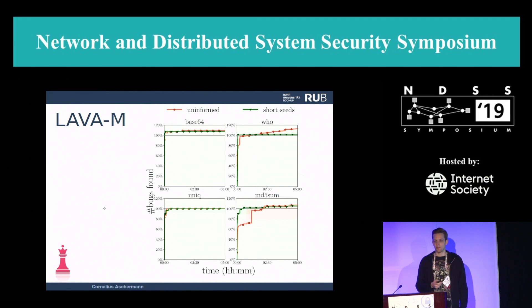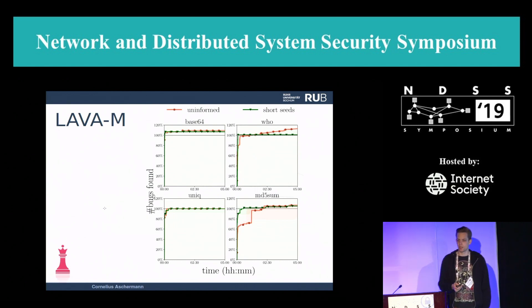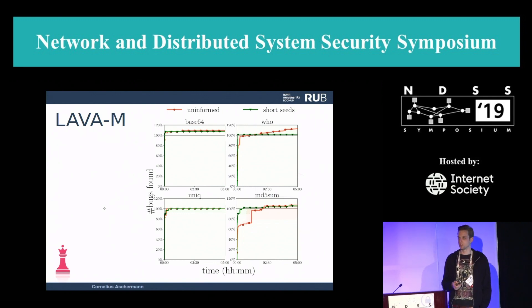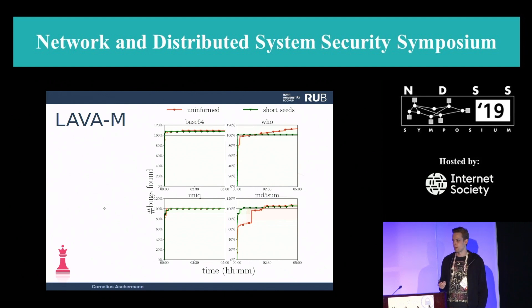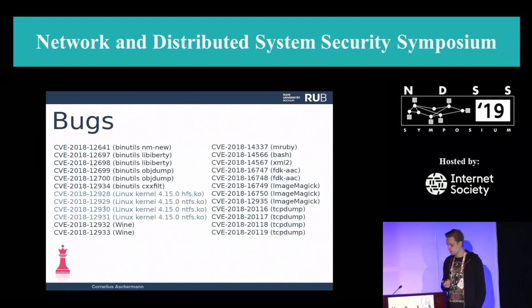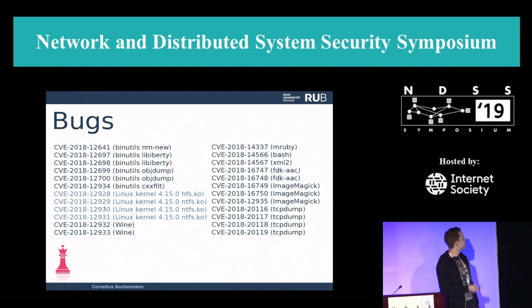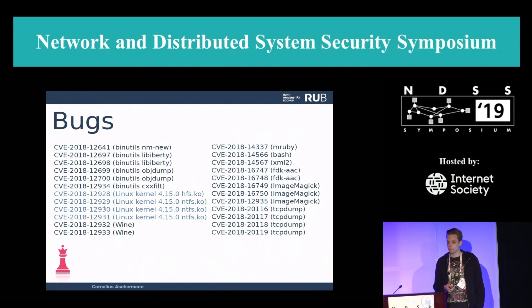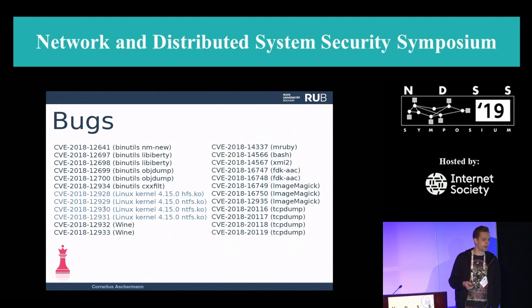We also evaluated on the well-known LavaM dataset. We found over 100% of bugs in all of the targets — in Unique we found one additional bug. In most cases, we needed less than five minutes to find all of the planted bugs, and we were even able to find all bugs without access to seeds. We also found a whole bunch of real bugs in binutils, the Linux kernel, and well-known programs such as TCPDOM, ImageMagick, FTK, and AAC — which is used in all Android phones for media decoding — demonstrating that we're able to scale across various target environments.